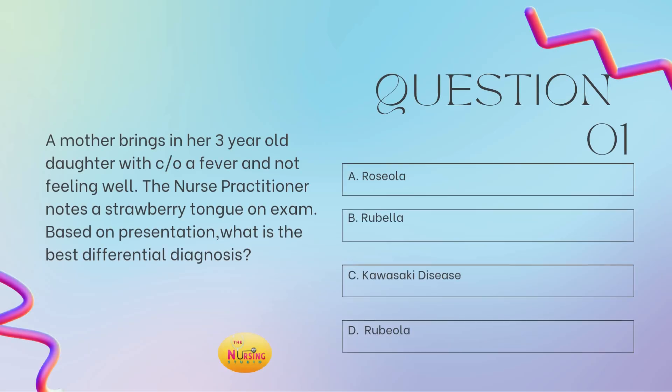Question number one states: a mother brings in her three-year-old daughter with complaints of a fever and not feeling well. The nurse practitioner notes a strawberry tongue on exam. Based on presentation, what is the best differential diagnosis? Is it A, roseola; B, rubella; C, Kawasaki disease; or D, rubeola? Take a moment and tell me what you got in the comments, you guys.